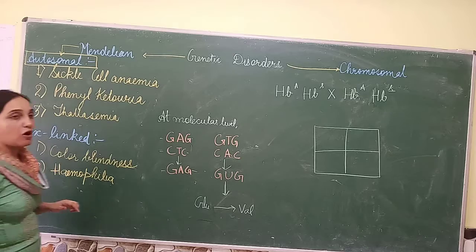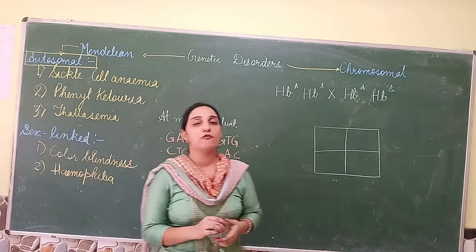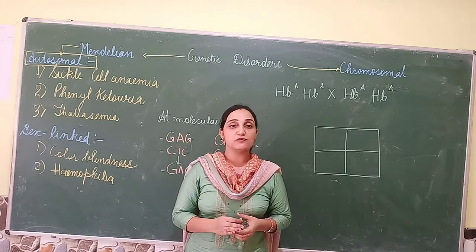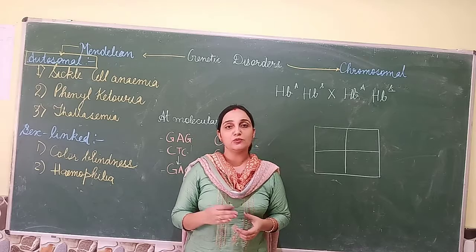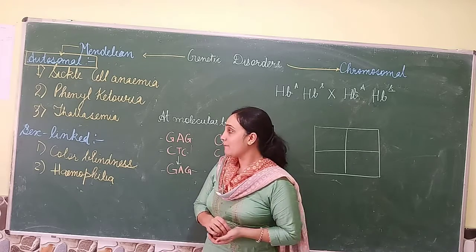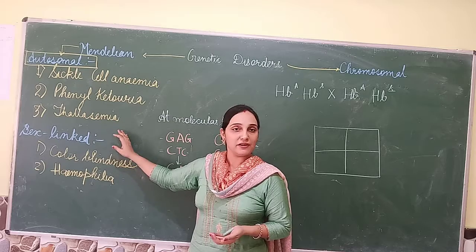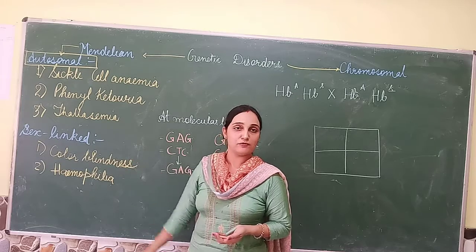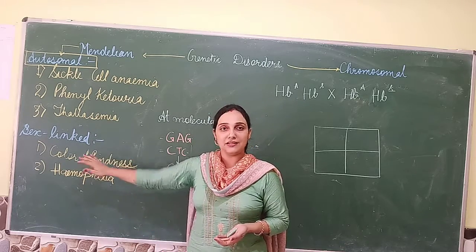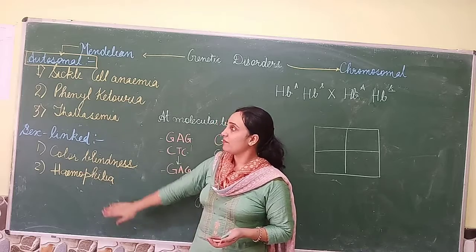In autosomal type of disorders, the first 22 pairs of chromosomes are responsible for inheriting a particular trait. But in the case of sex-linked disorders, it is the last 23rd pair which is responsible for carrying a particular trait. I will now discuss each one by one.